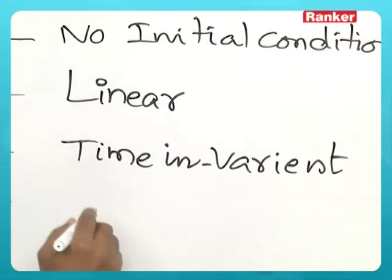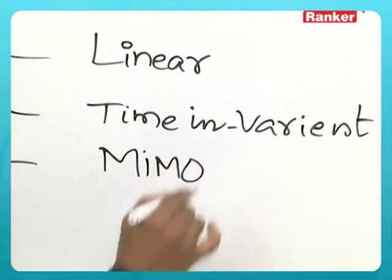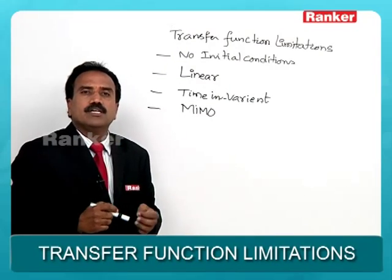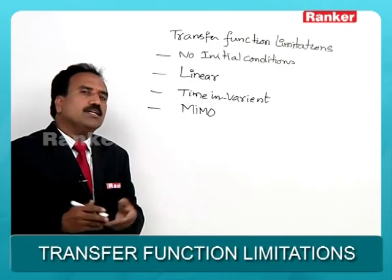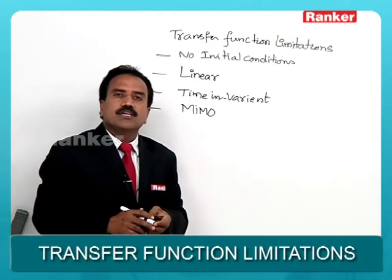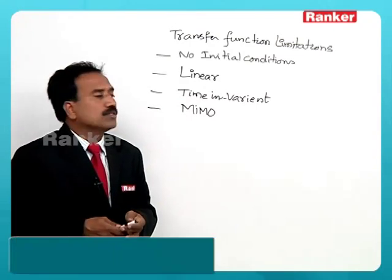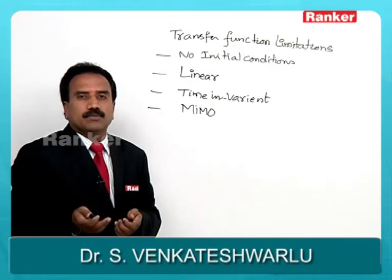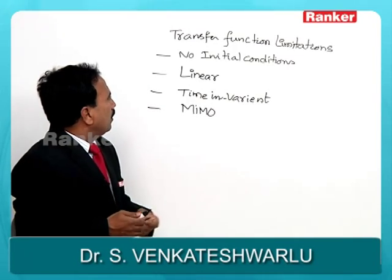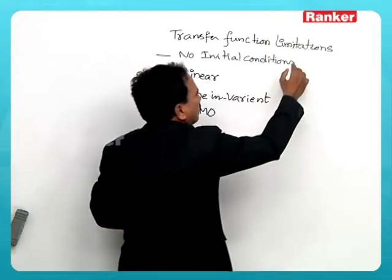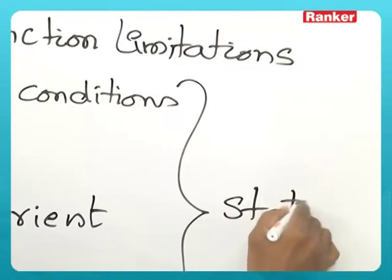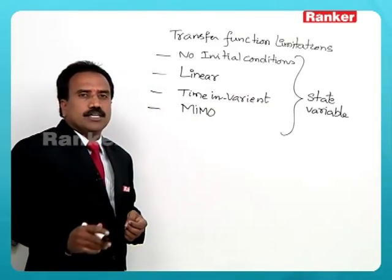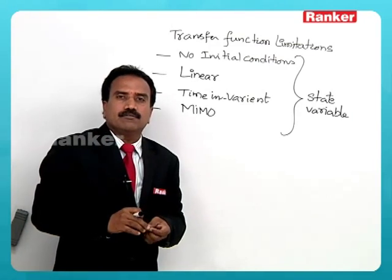Another limitation of transfer function is that it cannot be applied to multiple input and multiple output systems — it is only for single input and single output systems. In practical or real systems there may be multiple inputs and outputs, so transfer function analysis cannot be applied in such cases. All these limitations can be overcome by the state variable approach, which we will see at the end of this subject.